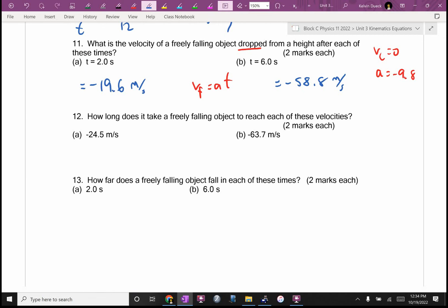I don't like the way number 12 is worded because it requires you to assume that it's dropped. This is one of the reasons I'm not counting this quiz. It says how long. I think for both of these, I'm going to use T equals VF over A. It's going to be negative 24.5 divided by negative 9.8. Is that 2.5 seconds? And negative 63.7 divided by negative 9.8. Is it 6.5 seconds?